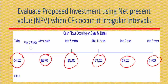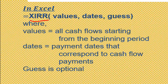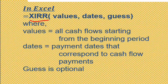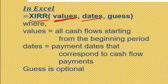Excel has a function called XIRR, which can be used when cash flows are occurring at irregular intervals. The syntax is: XIRR(values, dates). The values are all the cash flows starting from the current period, and dates are the corresponding dates when each cash flow occurs. There is also an optional 'guess' argument, which you can ignore in most cases. All you need are the values and dates to solve this problem.